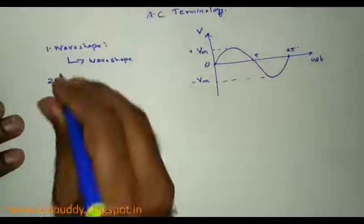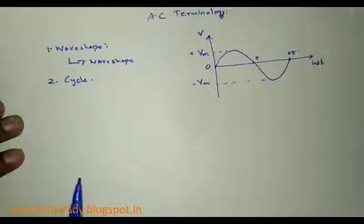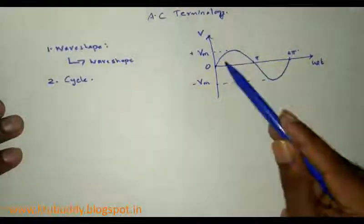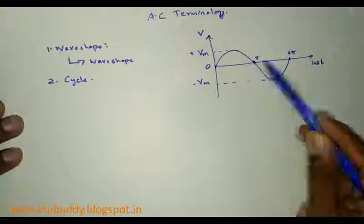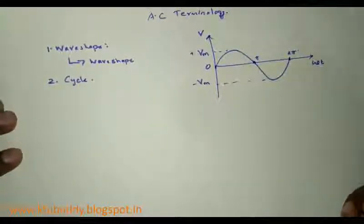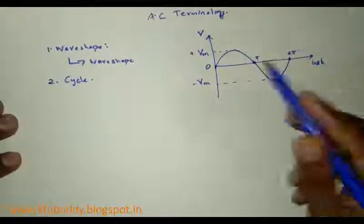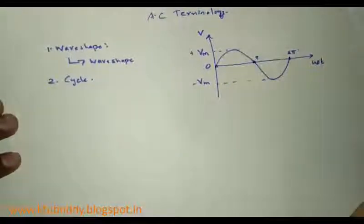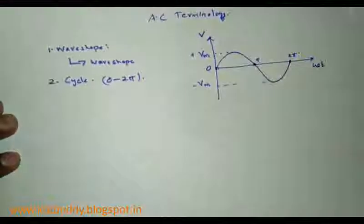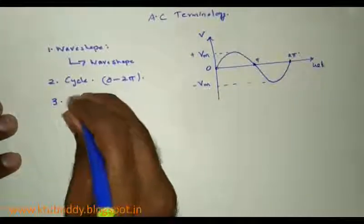The second term is cycle. A cycle is defined as one complete set of both positive and negative values. This is one complete set of positive instantaneous values of voltage, and this is one complete set of negative instantaneous values of the sinusoidal voltage V. Therefore, the cycle of this waveform is from 0 to 2 pi.